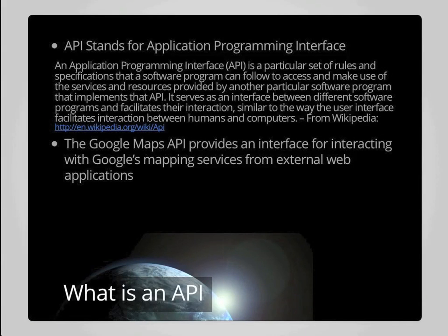So first, what is an API? API stands for Application Programming Interface. You can see here a definition taken from Wikipedia. An API boils down to an interface published by an application or programming language that allows other programs to communicate with it. You can think of it as a complement to the human interfaces we are more accustomed to working with in web applications, providing machine-to-machine communication between components on the Internet.